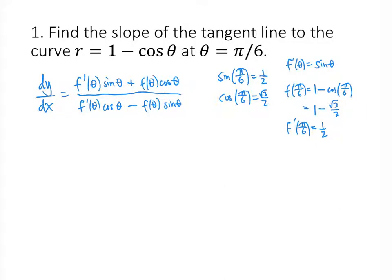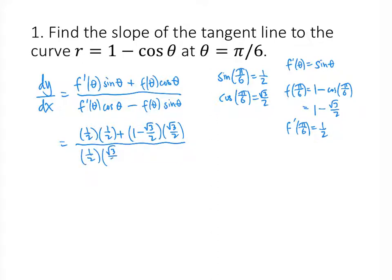Now we need to substitute these values in. f prime of theta is 1/2, sine of theta is 1/2, plus f of theta which is 1 minus square root of 3 over 2, times cosine of theta which is square root of 3 over 2. Then on the bottom, f prime of theta is 1/2 again, cosine of theta is square root of 3 over 2, minus f of theta which is 1 minus square root of 3 over 2, times sine of theta which is 1/2.